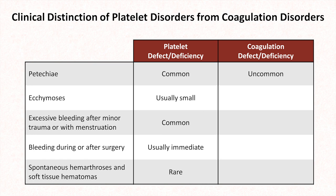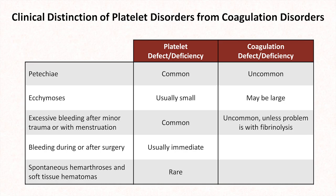To contrast that, for coagulation defects or deficiencies, petechiae are uncommon, though ecchymosis may be very large. Excessive bleeding after minor trauma or with menstruation is uncommon, unless the problem is specifically with excessive fibrinolysis. Bleeding after surgery may be either immediate or delayed by as much as a day. And spontaneous hemarthrosis and soft tissue hematomas are common when the disorder is severe, most notably occurring in hemophilia, which is a deficiency in one of the several proteins of the coagulation cascade.